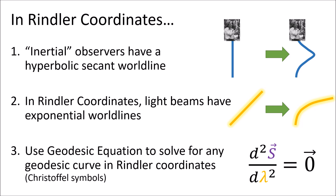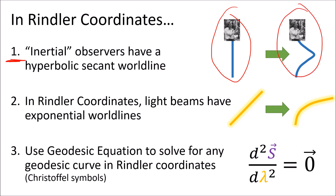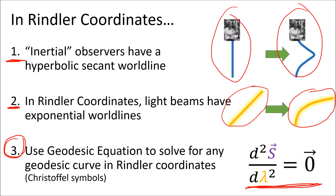So in inertial coordinates, geodesics of beams of light have diagonal world lines at 45 degrees, but in Rindler coordinates, the geodesics of beams of light have exponential world lines. We've also seen how geodesics for inertial observers give us straight lines in inertial coordinates and hyperbolic secant curves in Rindler coordinates. Finally, let's use the geodesic equation to solve for any geodesic curve in Rindler coordinates, and to do this we will use the Christoffel symbols in Rindler coordinates.